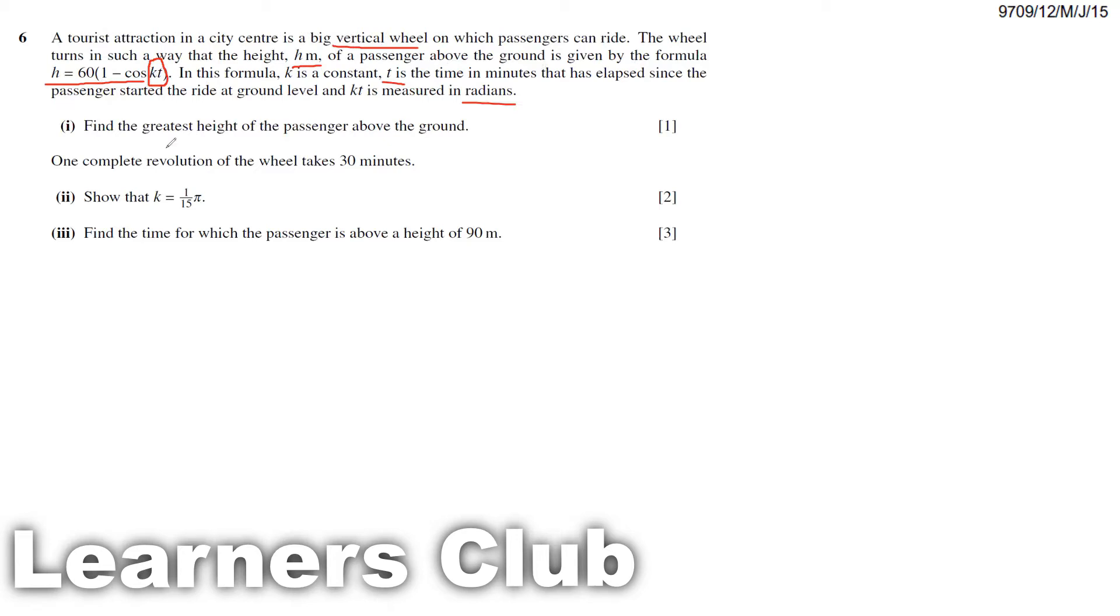The first question: find the greatest height of the passenger above the ground. So they're asking what would be the maximum value of h. As you can see this expression, there is cos. If we take cos of any angle, cos value can range between minus one to one.